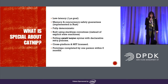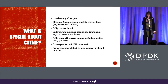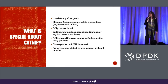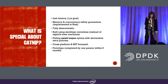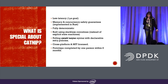So what ended up being special about Catnip? First of all, Catnip is low latency. We get memory and concurrency safety guarantees because we implemented it in Rust. It's a fully deterministic library, and I'll go more into why that's important later. We built it using stackless coroutines instead of explicit state machines, and we developed a polling await async syntax that uses declarative retry policies. This is also cross-platform and MIT licensed, and we completed a prototype using one person within six months.